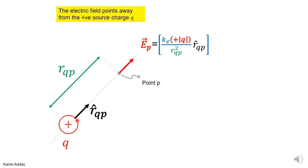Since this charge is positive, we can write it as the positive magnitude of Q. That means the electric field vector points in the same direction as the unit vector R̂, because everything is positive. So for a positive point charge, the electric field vector at point P points exactly in the same direction as the R̂ unit vector from Q to P.